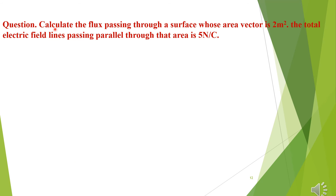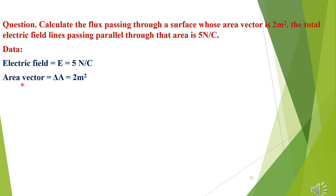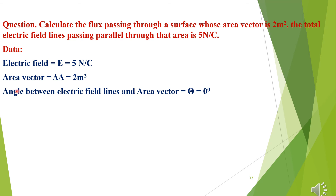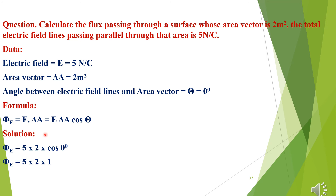Worked example: calculate the flux passing through a surface whose vector area is 2 m². The total electric field lines passing parallel through that area give E = 5 N/C. Since the field lines are parallel to the vector area, θ = 0°. Using Φ = E A cosθ and putting in the values: Φ = 5 × 2 × cos 0° = 10 N·m²/C, or 10 Volt·meters.